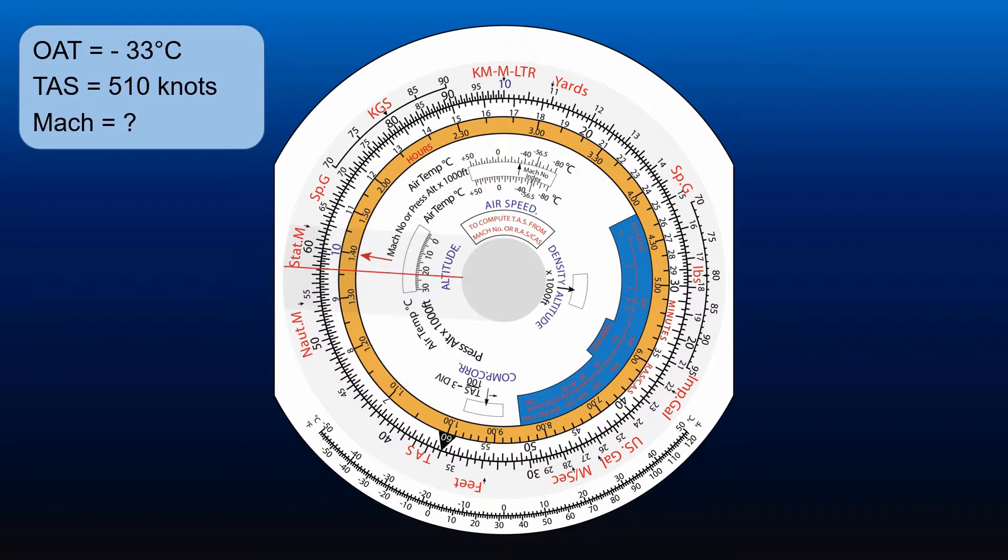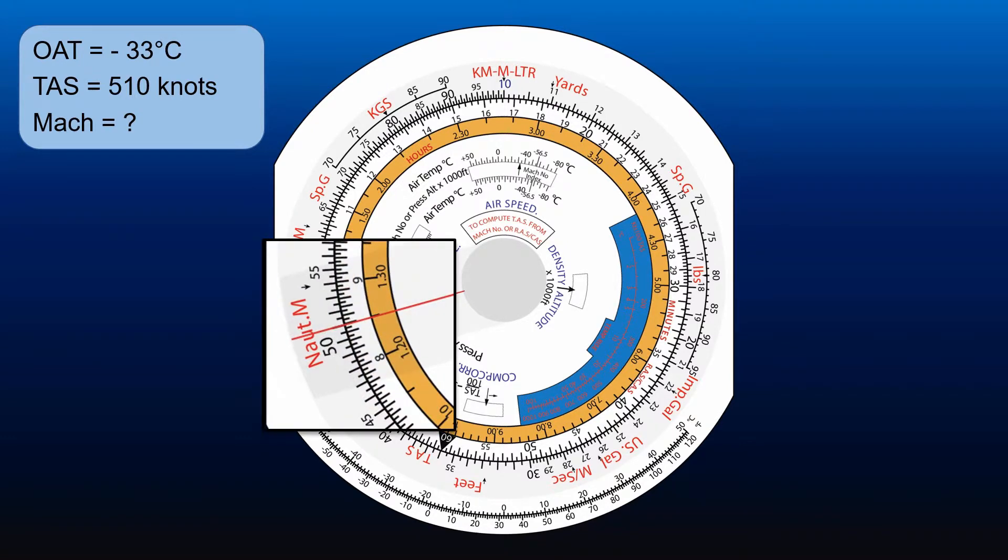For example, with the scale set up as before, what is the Mach number for a true airspeed of 510 knots? Align the cursor with 510 on the outer scale and read off the Mach number on the inner scale: 0.85.